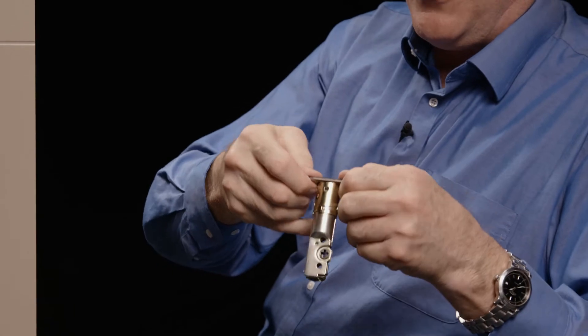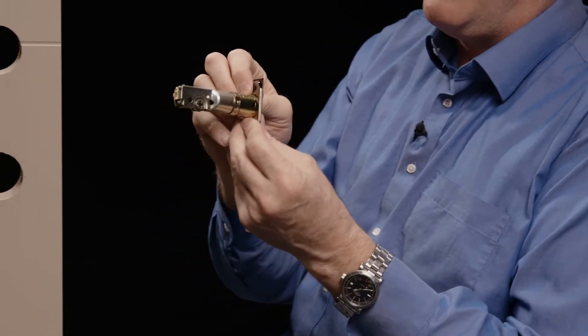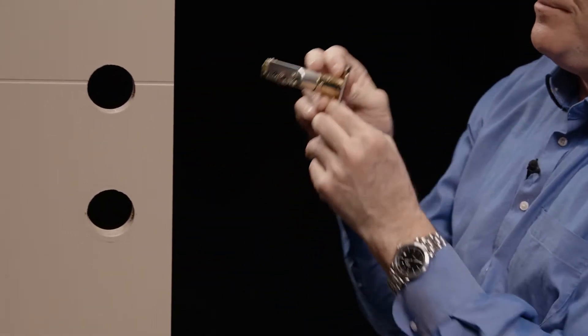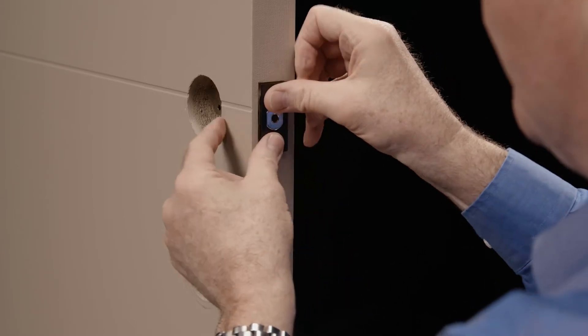The next step is to drop the trim plate onto it and click it in place. Now we're ready to install this into our door. We simply slide it into the door, like so.